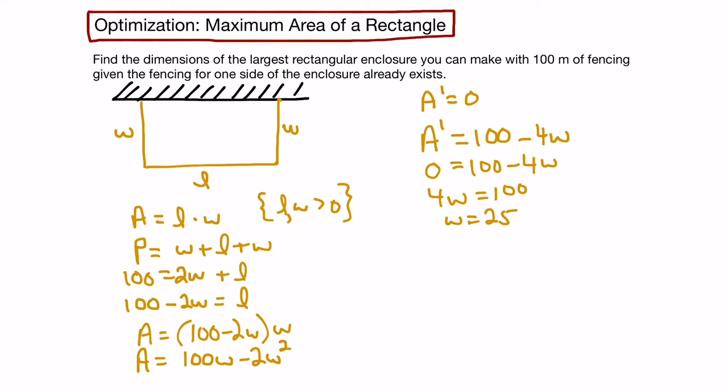It looks like we'll have a maximum area when our width is 25. Now let's find out the length because we want to find the dimensions. We can substitute w equals 25 into our perimeter formula. When we do that, we would get 100 minus 2 times 25 equals length. So 100 minus 50 equals the length, and our length would be 50.